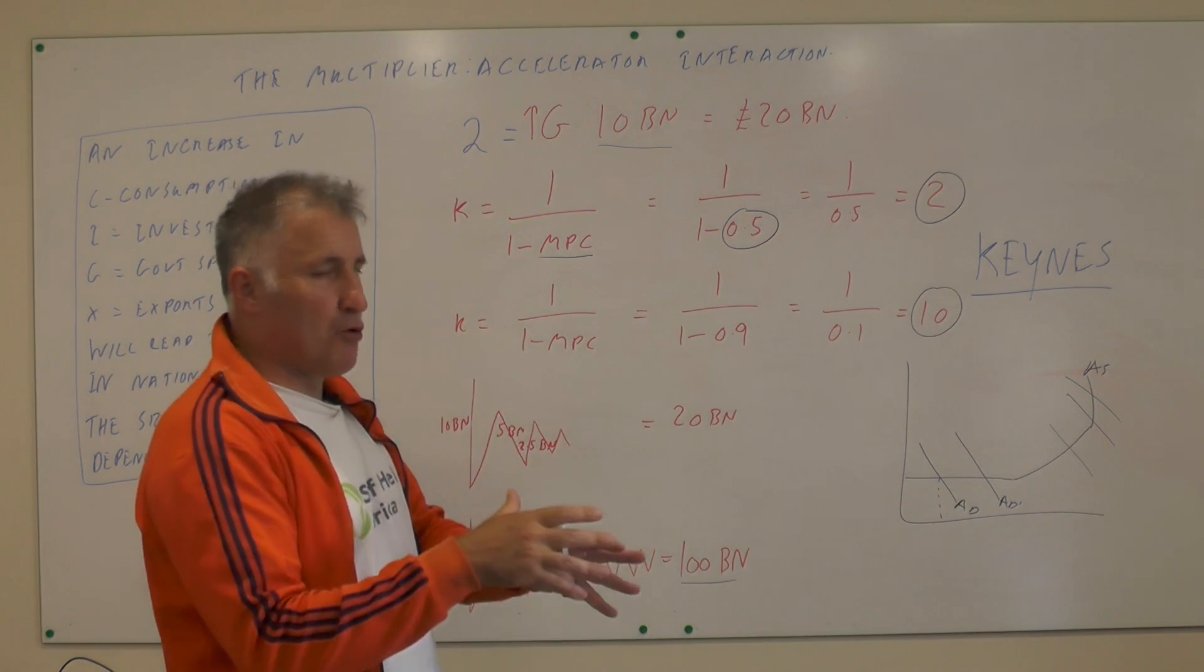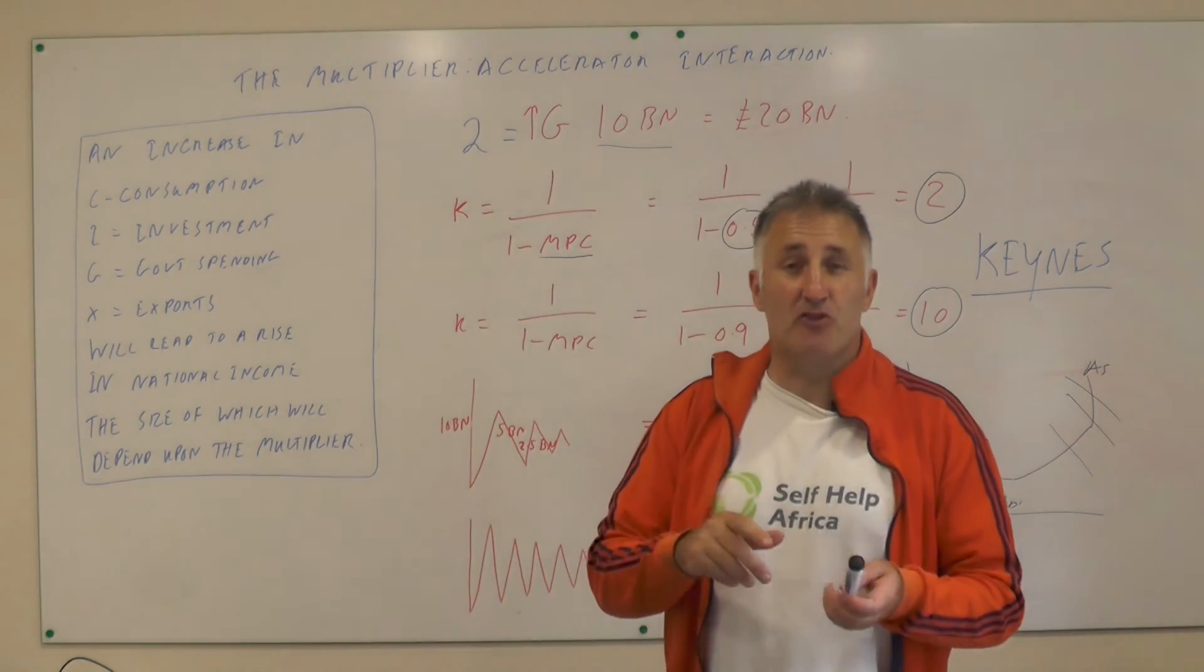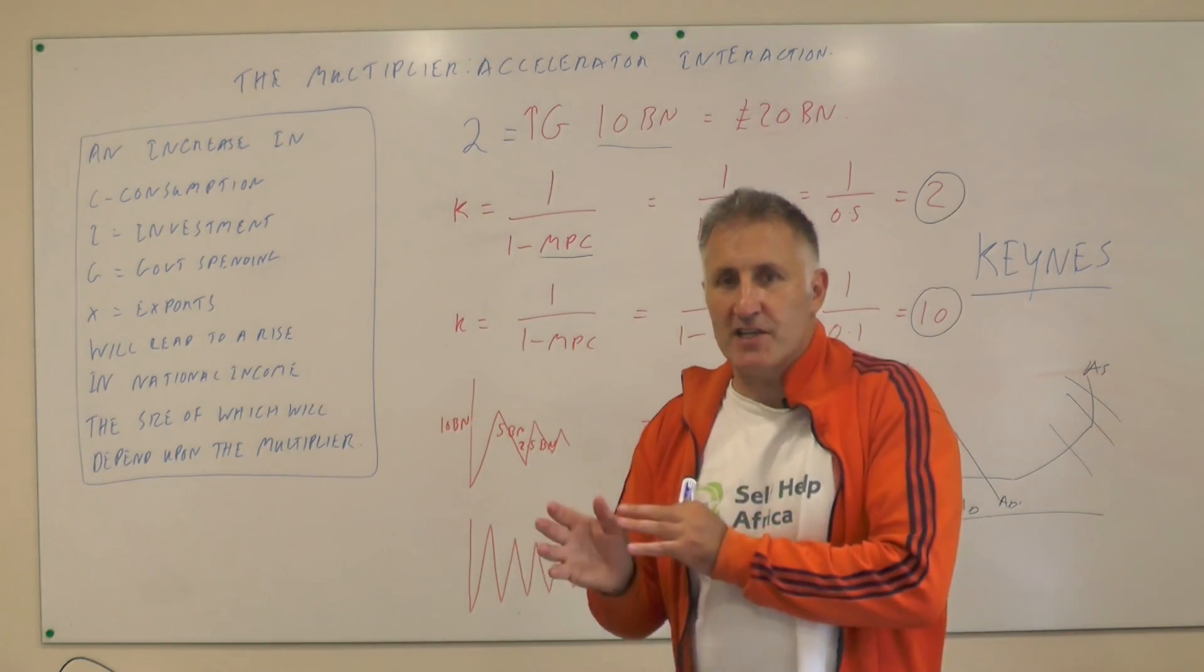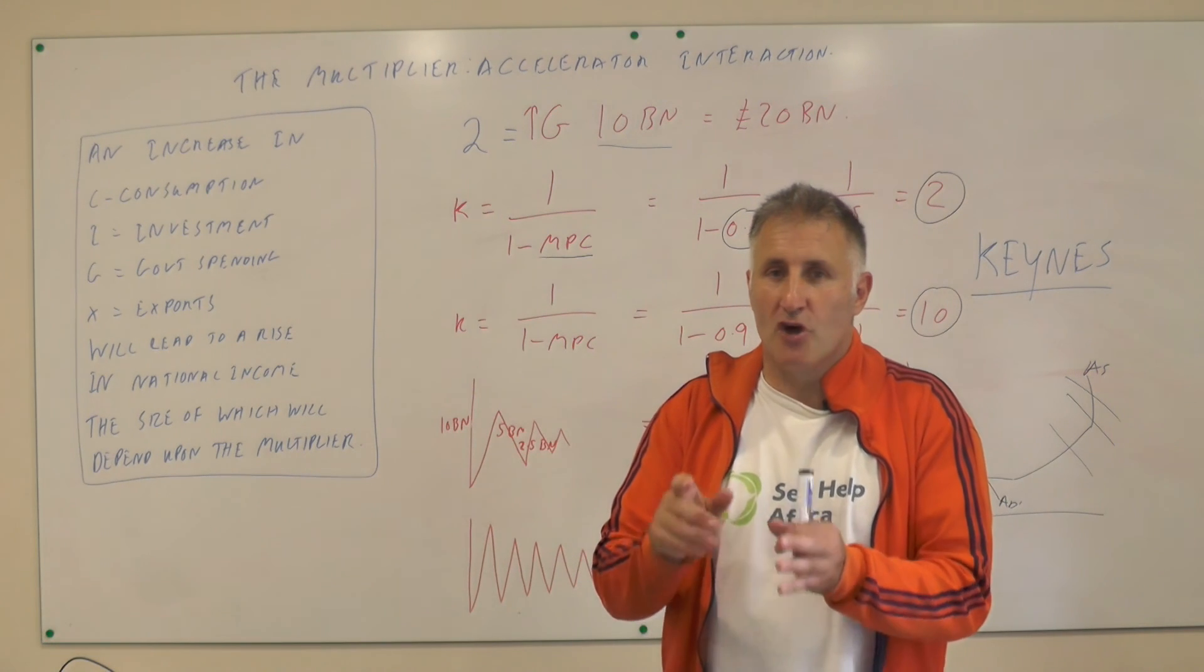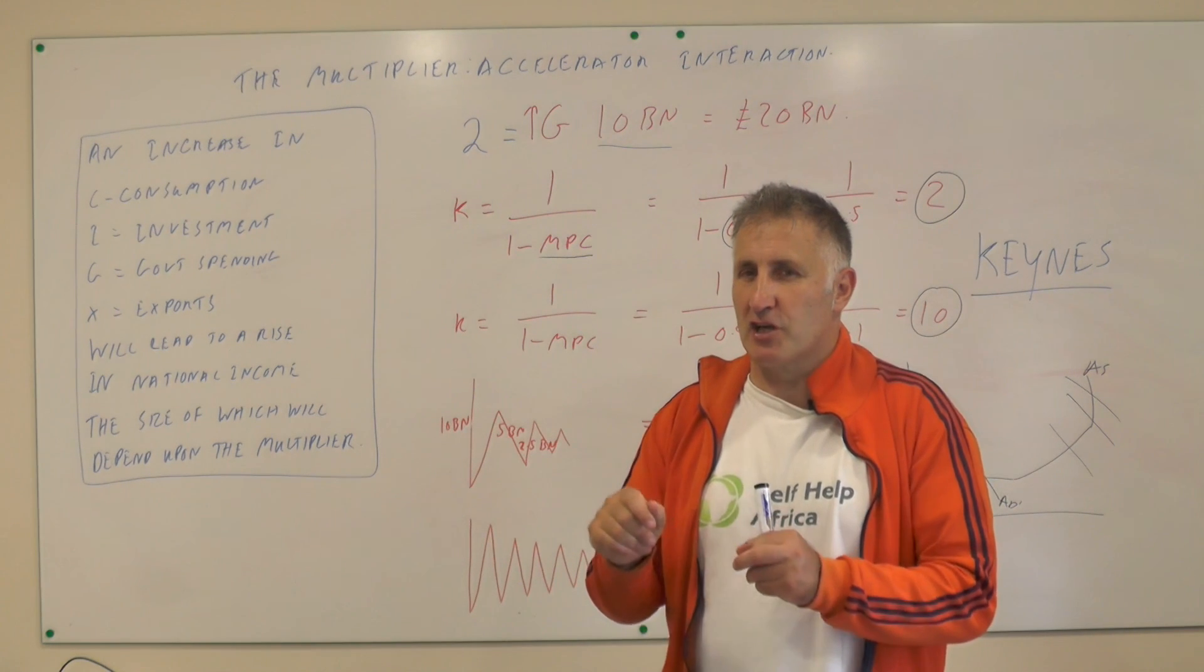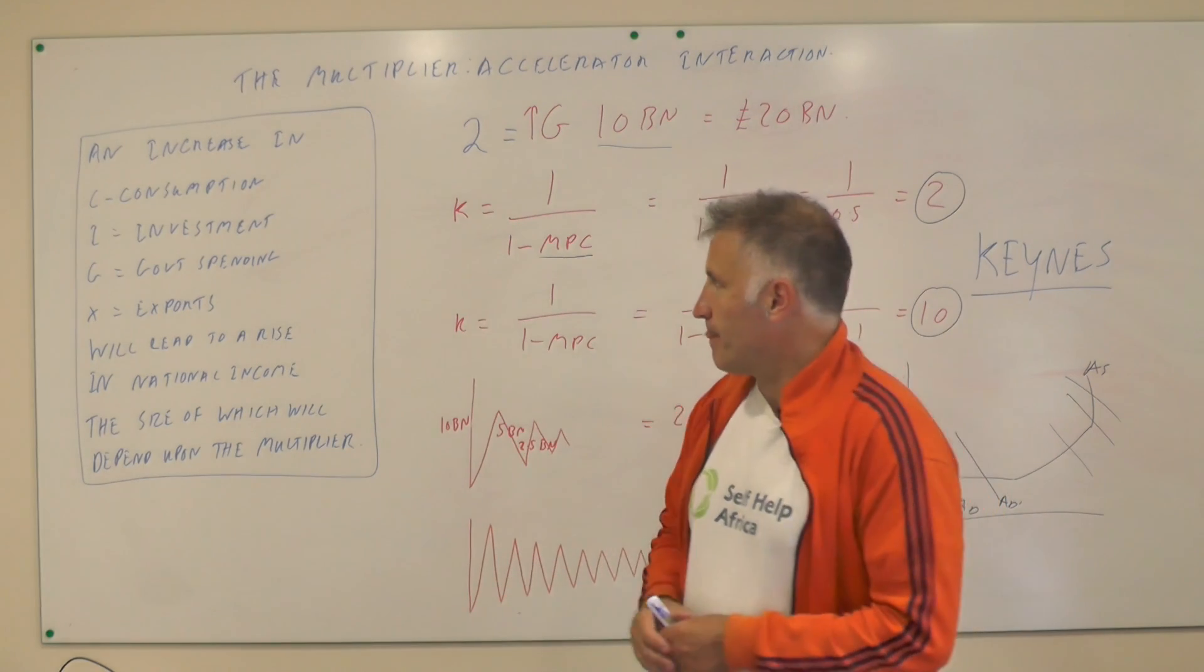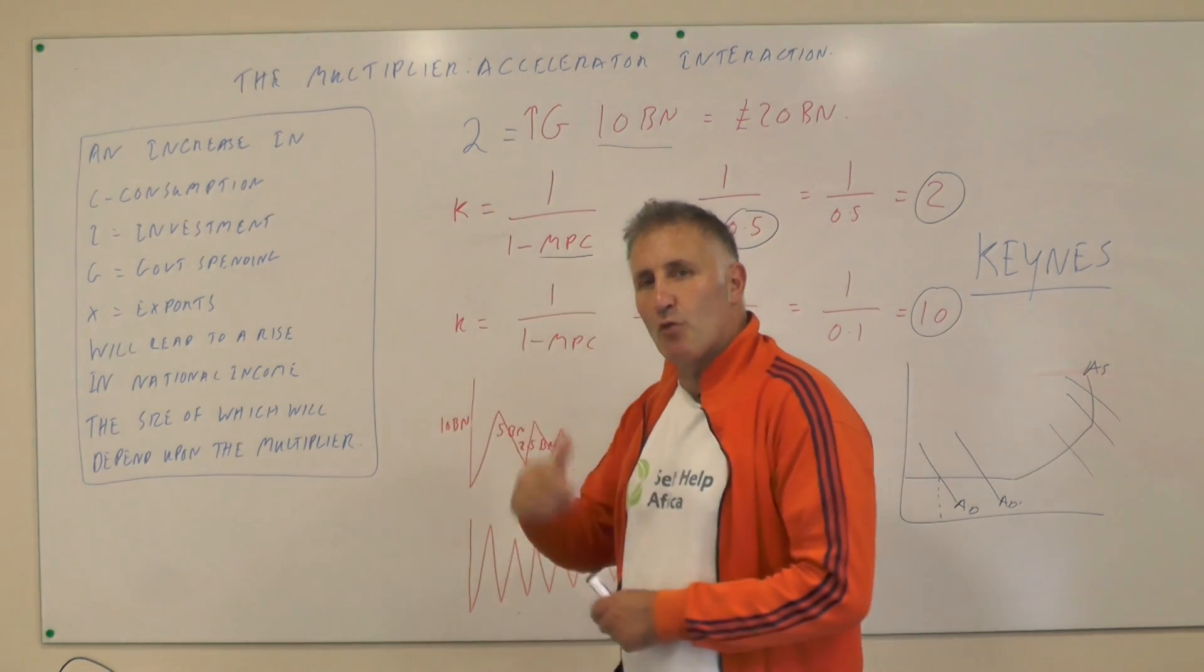At this moment in time you need to know that this is the multiplier: you put some money in and you're going to get more money out. So an initial increase in consumption, investment, government spending, or exports will lead to a larger rise in national income, the size of which will depend upon the multiplier. Okay, brilliant, well done.